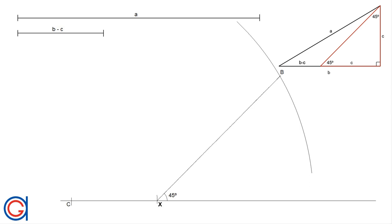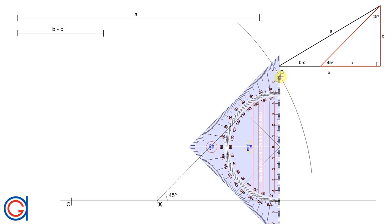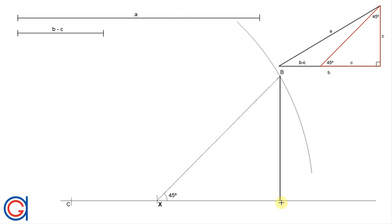And now we are going to draw a perpendicular line from vertex B until it touches the horizontal line, which will get our third and final vertex A.